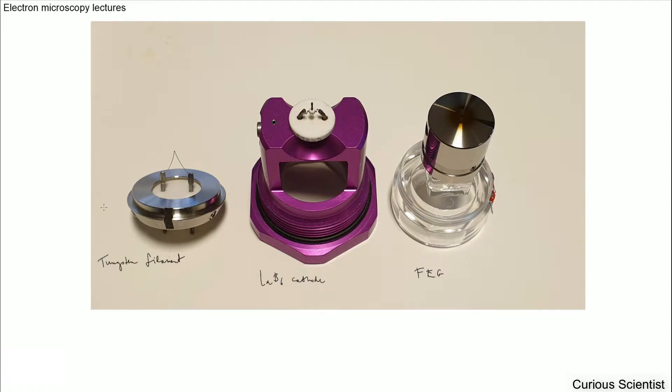Welcome everyone! In this video I'm going to talk about the different sources used in electron microscopy. As you can see on the picture, there are three objects. Each of them are different sources, and I wrote their name below them.